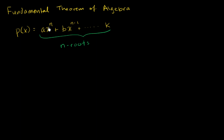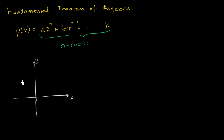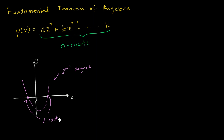You've seen second degree polynomials whose graphs might look something like this — a parabola. We know a second degree polynomial defines a parabola, and you can see that this function equals zero at exactly two places. It has exactly two roots, which is consistent with the fundamental theorem of algebra.